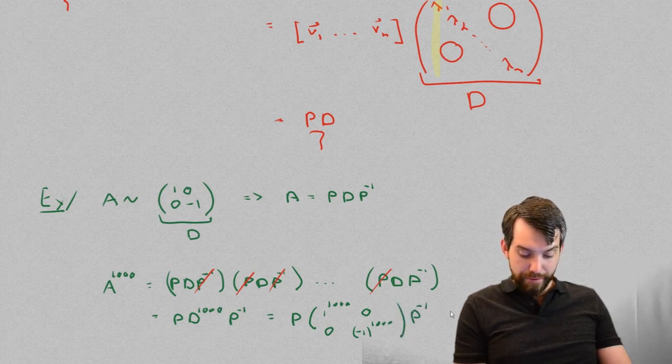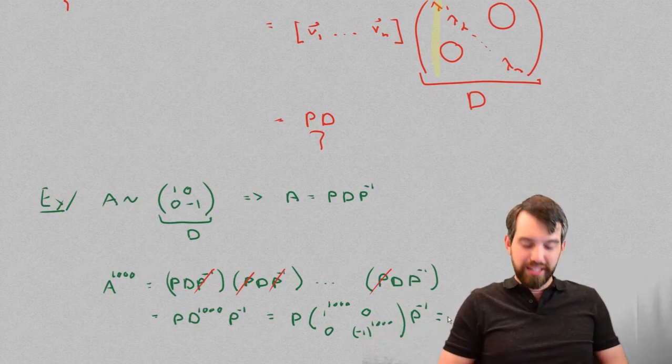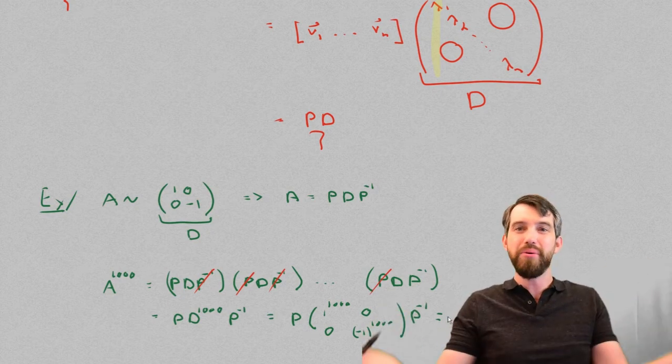Finally multiplied by that final P inverse on the far right side. And because minus 1 to an even power is just 1, this diagonal matrix to the 1,000 power is just the identity matrix.